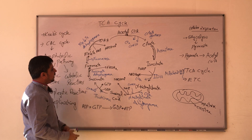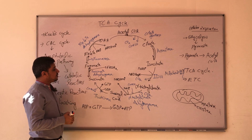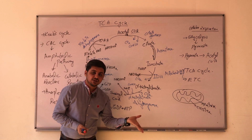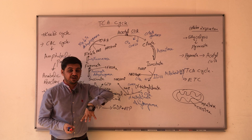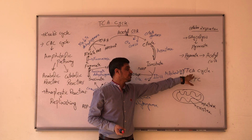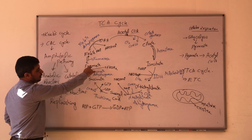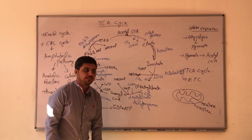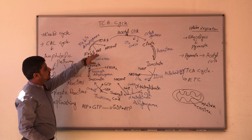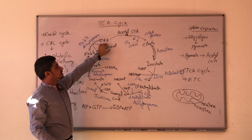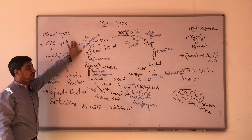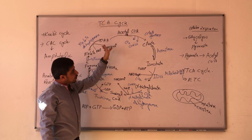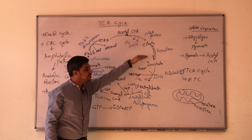From succinate, it will be converted into fumarate with the help of succinate dehydrogenase. This enzyme is very significant because it is not in the mitochondrial matrix but is present on the inner side of the mitochondrial membrane, and it is part of Complex 2 of the electron transport chain. Fumarate is then converted into malate by fumarase enzyme, and this malate is converted into oxaloacetic acid by malate dehydrogenase — again involving a dehydrogenase, giving NADH + H+. Oxaloacetic acid is now ready to start another Krebs cycle.